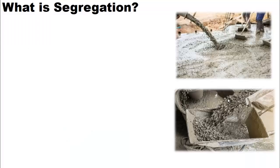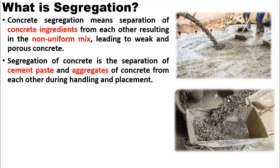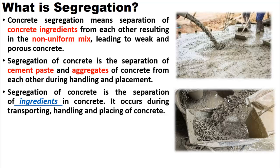What is segregation? Segregation can be defined in many ways. Concrete segregation means separation of concrete ingredients from each other, resulting in a non-uniform mix leading to weak and porous concrete. Segregation of concrete is the separation of cement paste and aggregates from each other during handling and placement. It occurs during the transporting, handling, and placing of concrete.